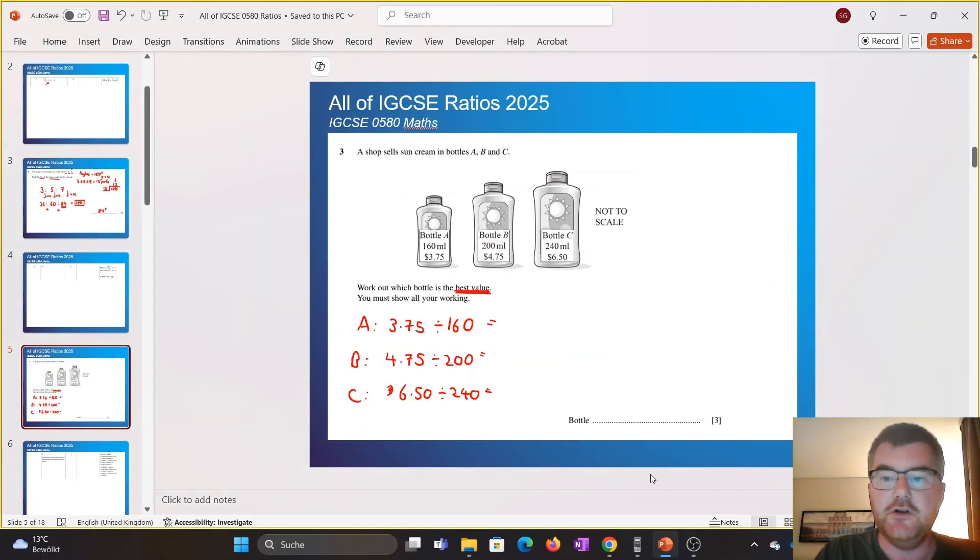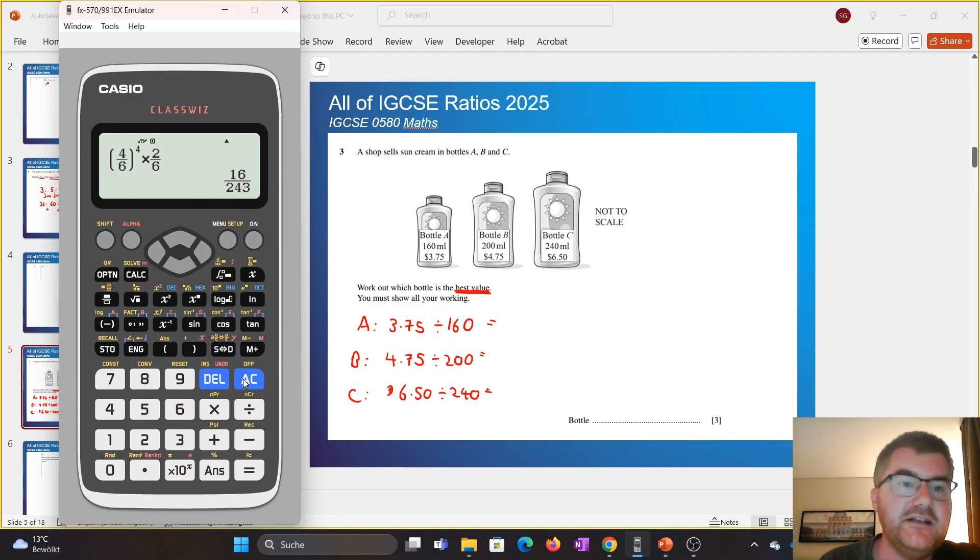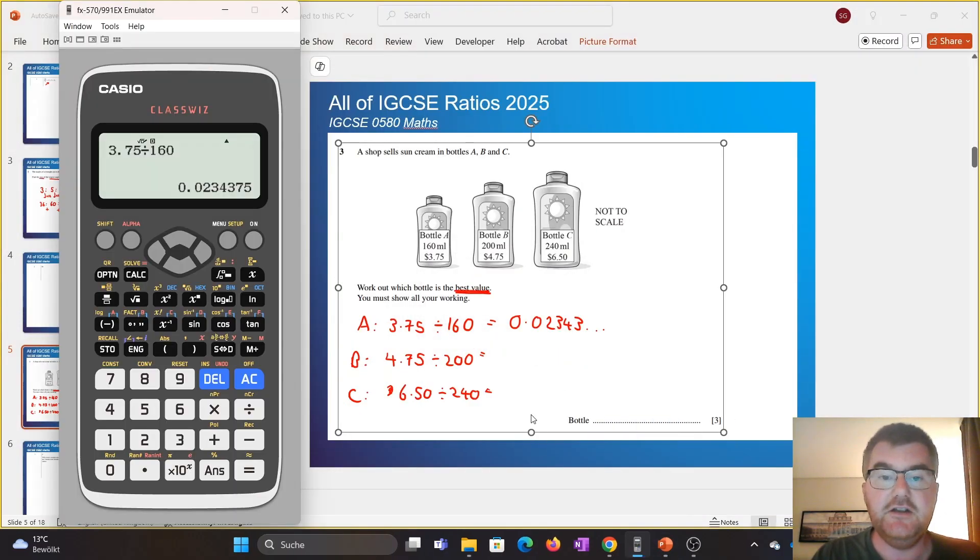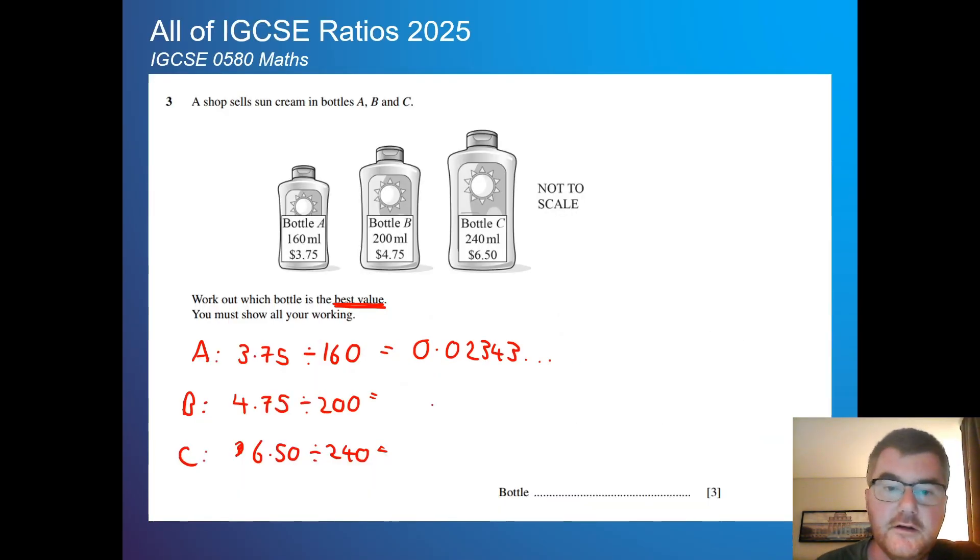I'm trying to work out the value you get for that one milliliter. So if I go to my handy calculator, this one here, let's write this as a decimal. 0.02434. The next one is 0.02343. And I'm just going to do the same for each of these calculations. So $4.75 divided by 200. That's 0.02375.